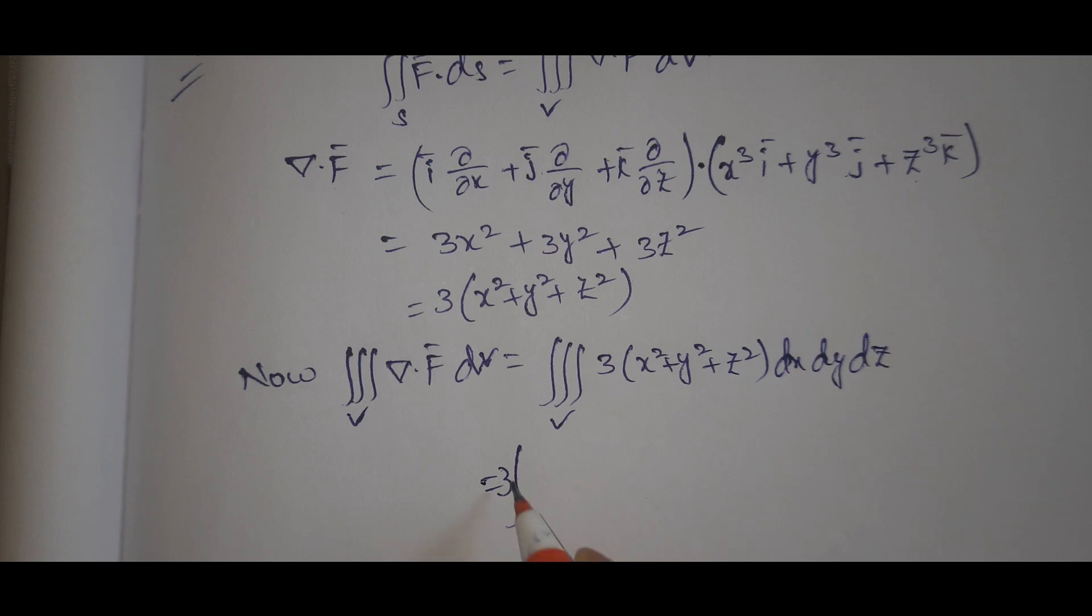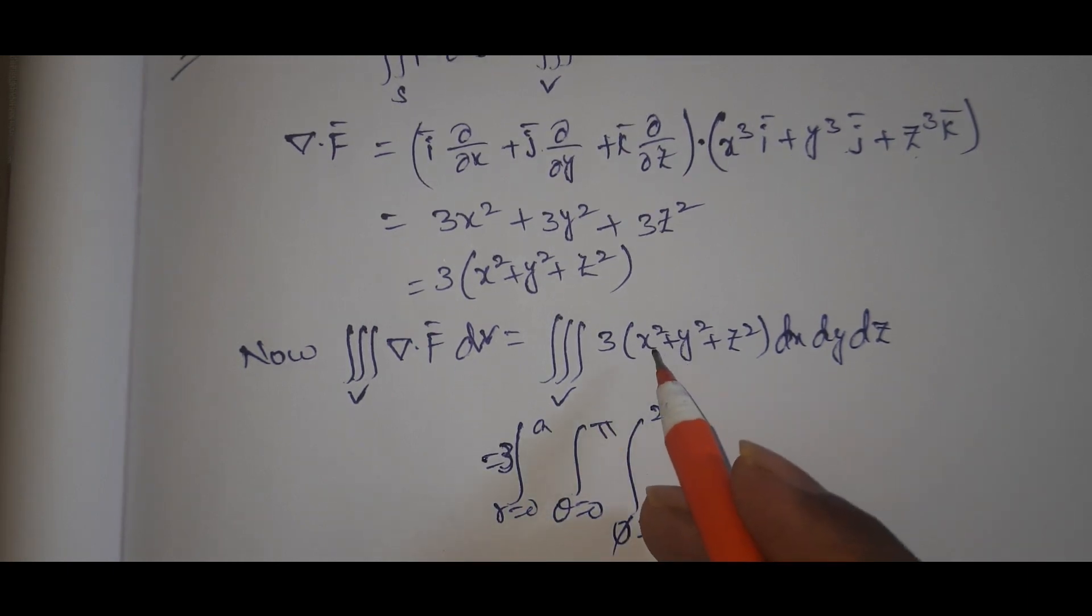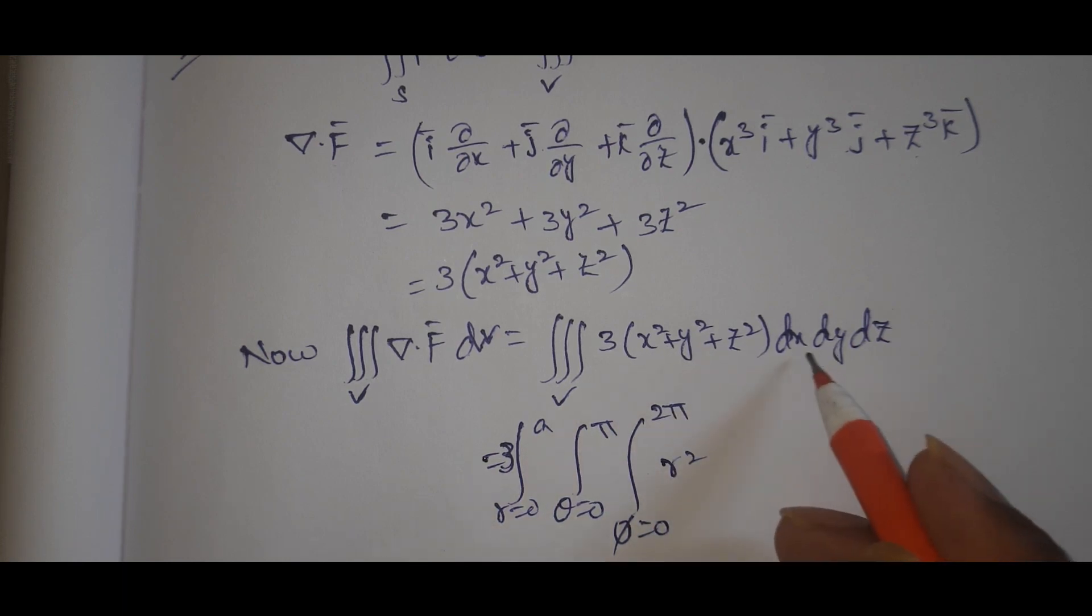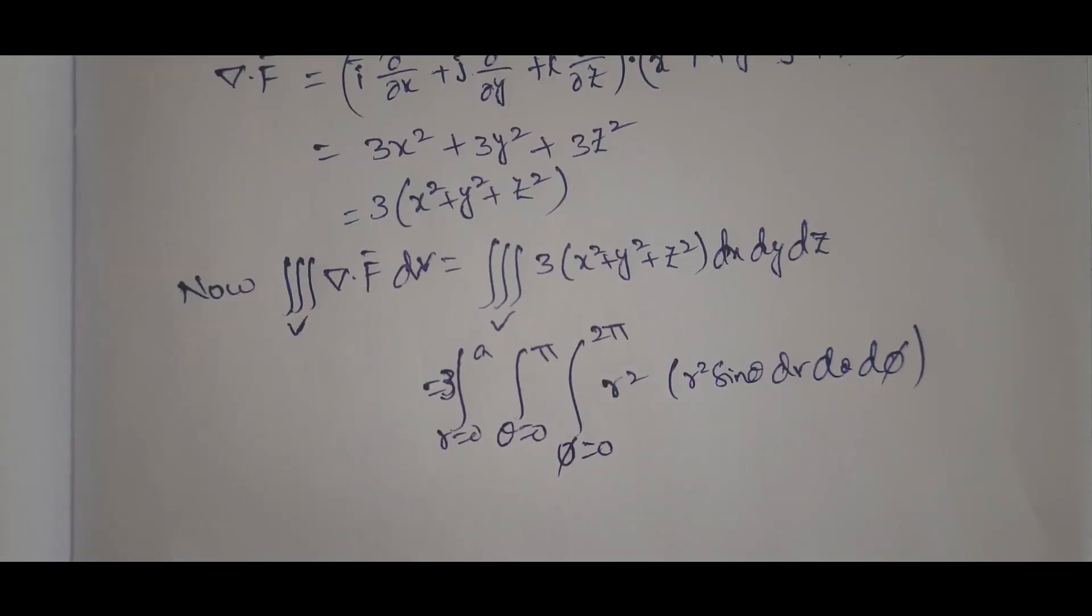We have r equals 0 to A, theta equals 0 to pi, phi equals 0 to 2pi. X squared plus y squared plus z squared equals r squared. And dx dy dz transforms to r squared sine theta dr d theta d phi.